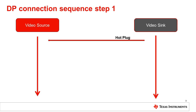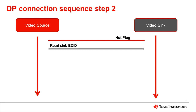Let's start with an overview of the DP connection sequence. The sink starts by driving high on the hot plug detect, indicating to the source that there is a display device connected. Once the source detects HPD being high, the source reads the sink's Enhanced Extended Display Identification, or EDID, via the aux bus — a data structure that describes the sink capabilities. The source then reads the sink's DisplayPort Configuration Data, or DPCD, through the aux bus, which describes the sink link and DSC capabilities.